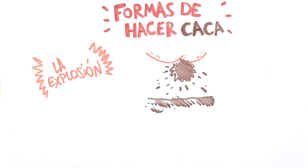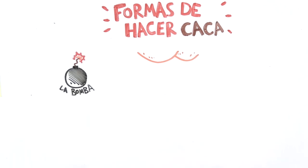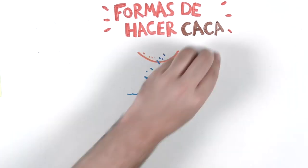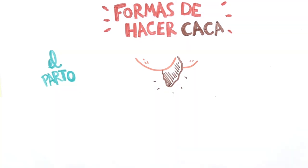The worst poop is called the explosion, and well, we don't need to explain this one. The submarine, the poop that goes directly to the bottom of the toilet. The bomb, the one that suddenly cools your booty. And finally, the labor, that it's hard to expel and sometimes it can run aground.